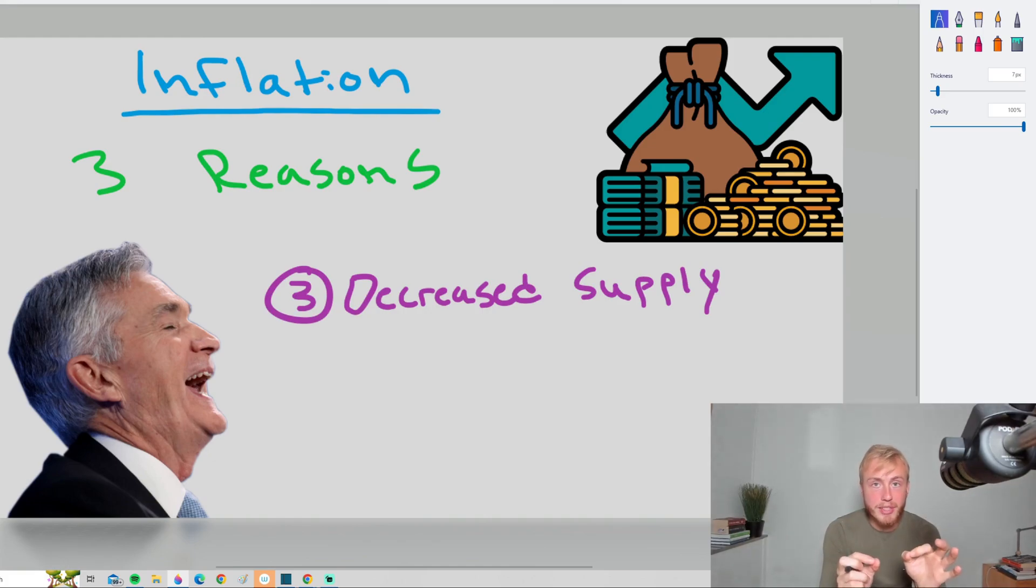And the third reason for inflation is decreased supply. And this one is pretty similar to the previous one, but the opposite. So let's say that we have a city now where we have five McDonald's. All of these circles are McDonald's. So we have five McDonald's stores and this is the same city as before. So the people only want McDonald's.